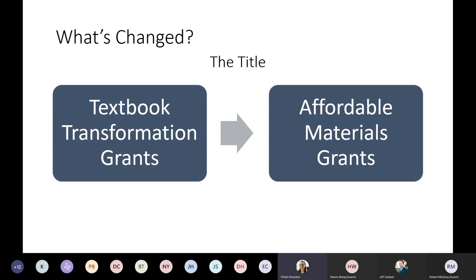We changed the title of the grant program. For the past 17 rounds, the grants were called Textbook Transformation Grants because the initial purpose was to take courses using commercial textbooks and transform them to use open textbooks instead. Over the years, that emphasis on textbooks slipped away. Open educational resources, free resources, and affordable resources come in all shapes and sizes, and textbooks aren't always the solution proposed. So we changed the title — the grants program is now called Affordable Materials Grants.